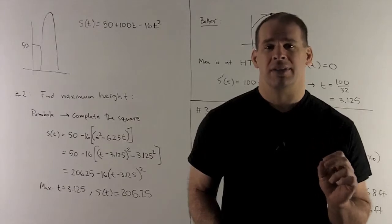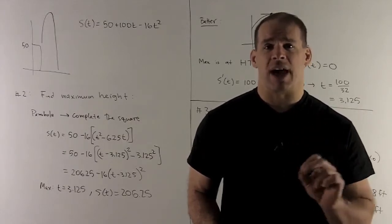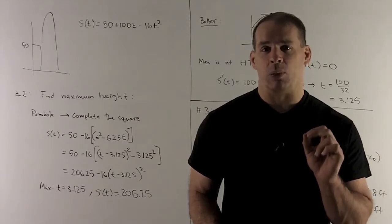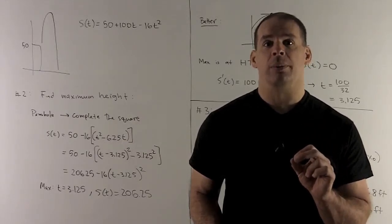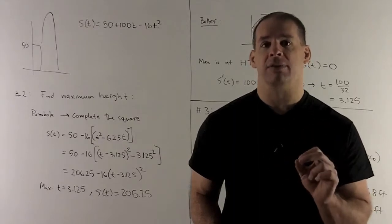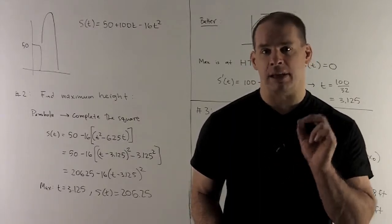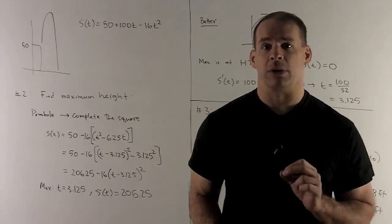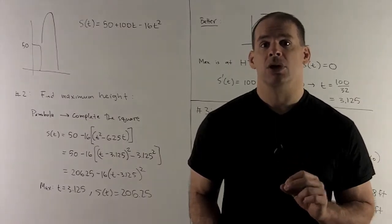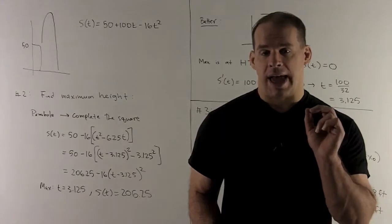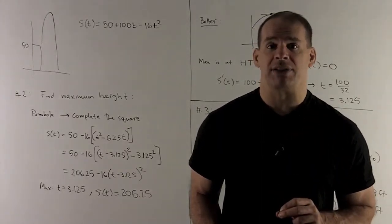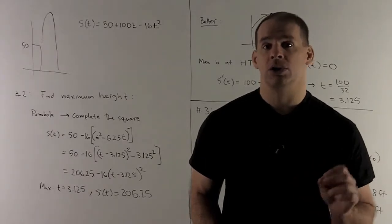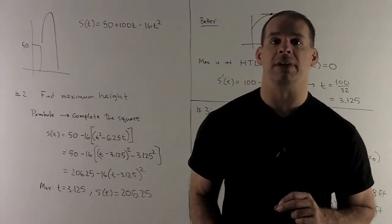So now if you notice, that second part, that's always going to have a negative sign there. So the idea would be the biggest I could get would be where I get that second term equal to zero. We'll never get a positive. So once I have it equal to zero, I've hit my max. That'll be equal to zero precisely when t is equal to 3.125. So our maximum is going to be at time 3.125 seconds, and then that height is going to be what comes out when you put that in there, or 206.25 feet.